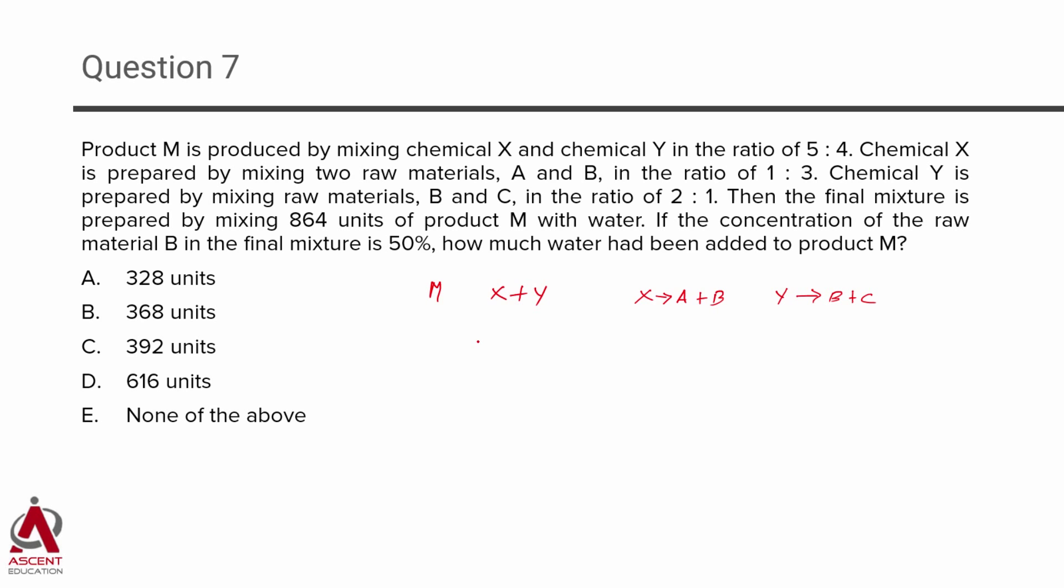Y is also not a simple chemical. It's a mixture of two things. It comprises B and C. So, what is M going to comprise? Because it comprises X and Y, it's going to comprise A, B and C. So, M is going to have A, B and C. So, this is what is given from the first two, three statements.